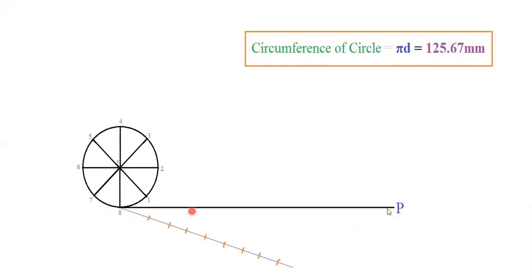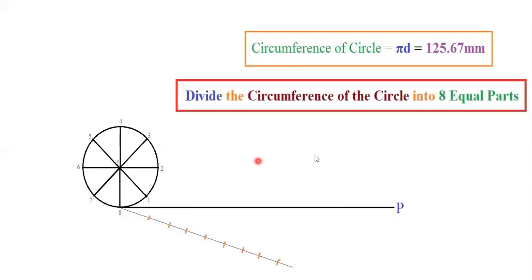Since we divided the circle into 8 parts, divide the circumference line also into 8 equal parts. Draw an inclined line at 30 degrees and divide it into 8 equal parts, each of 10 mm — 10 mm, 10 mm, 10 mm, and so on — giving 8 equal divisions along this line.